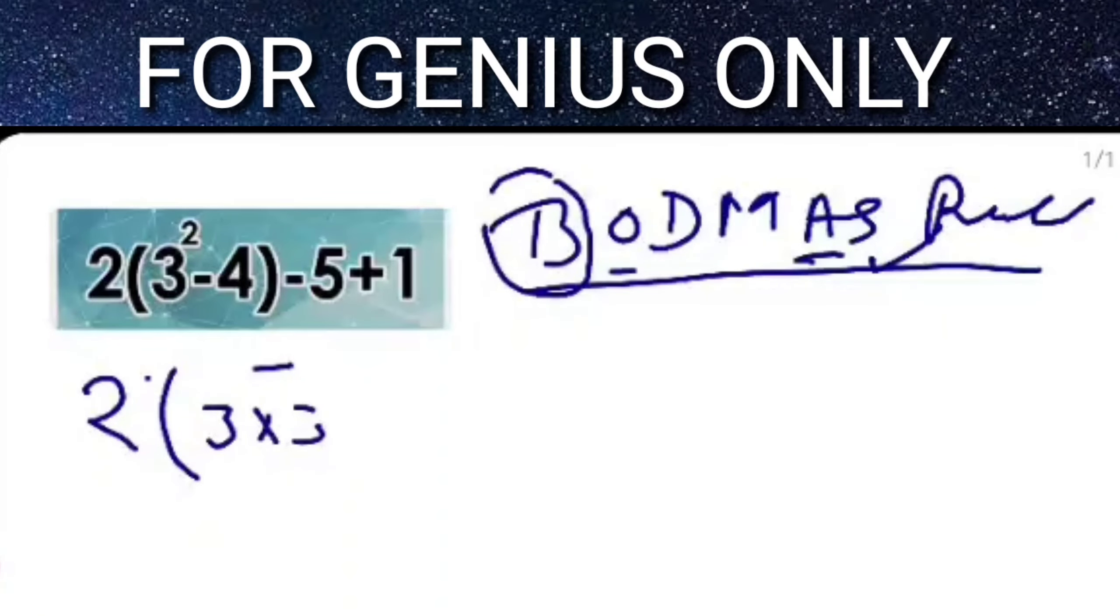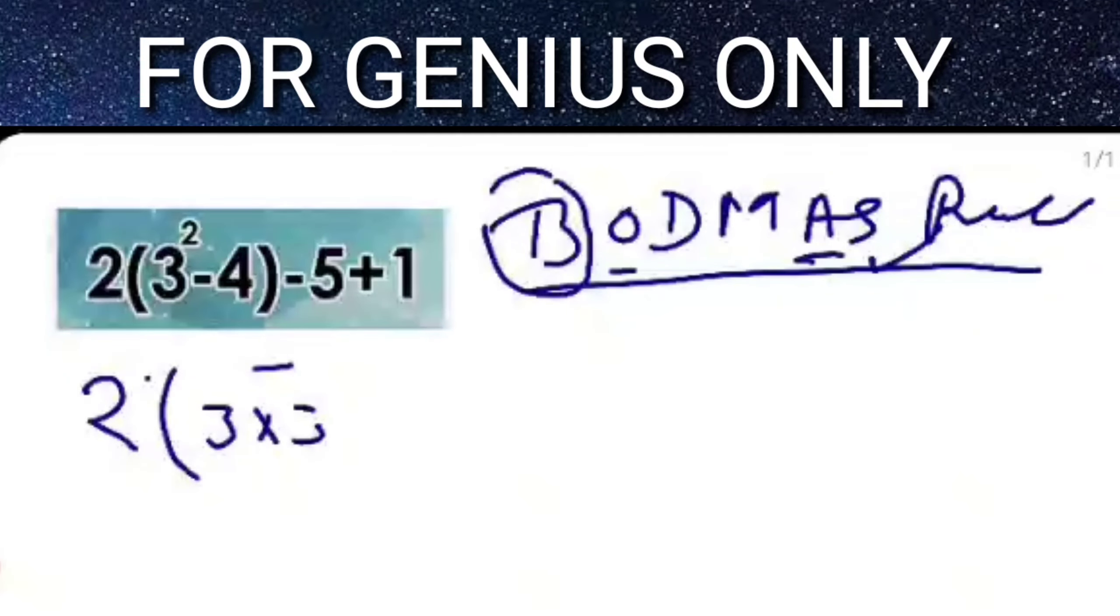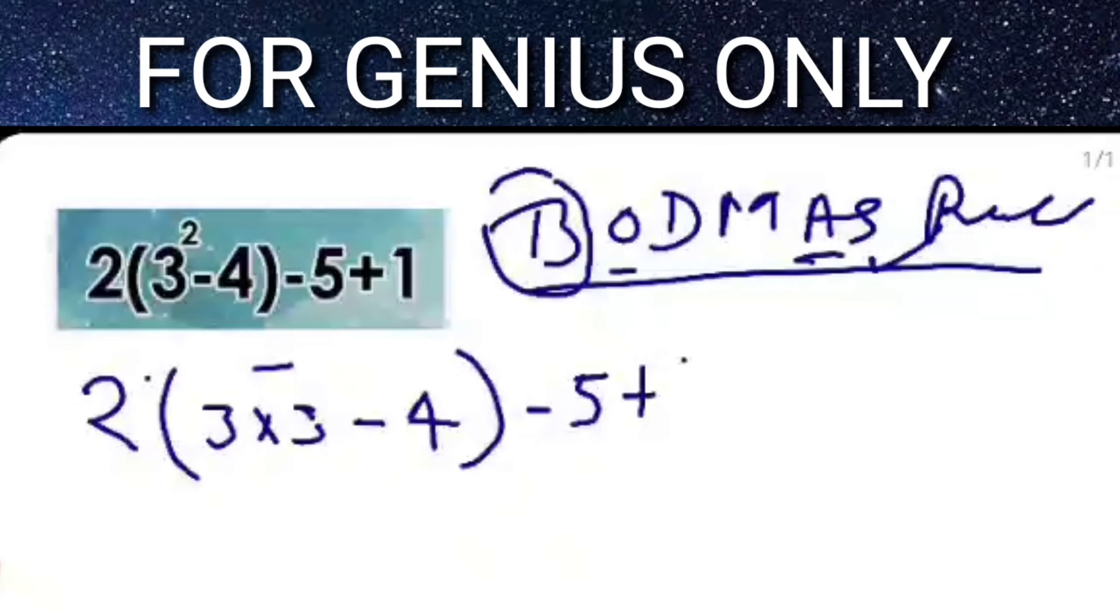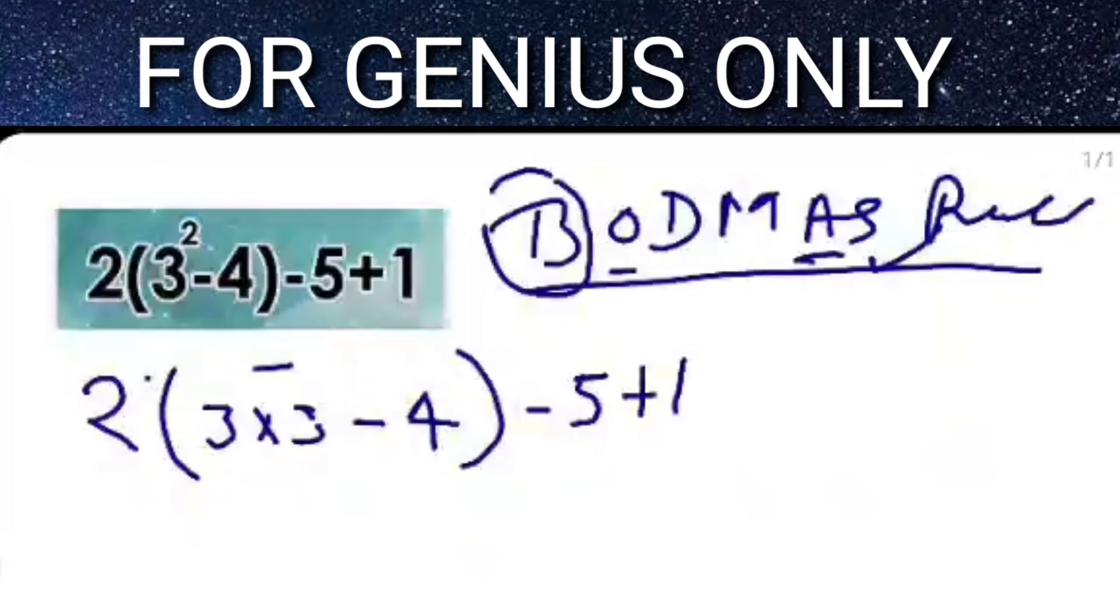You can see here, 3 into 3 is 9, minus 4, close bracket, minus 5 plus 1. Now you can find the answer.